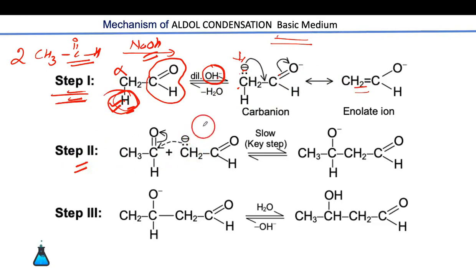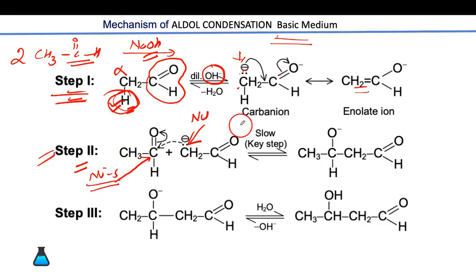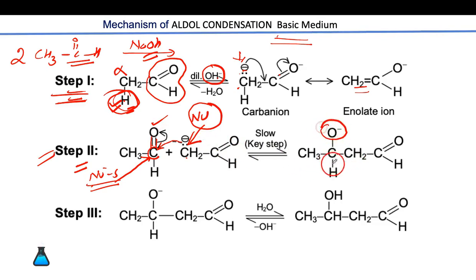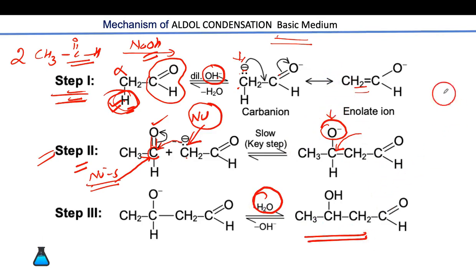In the second step, because the alpha carbon carries a negative charge, it is a very good nucleophile. Another molecule of the carbonyl compound provides a nucleophilic site where the carbonyl carbon is attacked. This carbanion attacks the carbonyl carbon, and both electrons are accepted by the oxygen. So in step two, the oxygen becomes negatively charged and a new C-C bond forms. This negative oxygen then accepts a hydrogen from water, converting the intermediate to the aldol product.